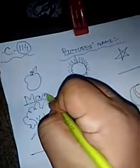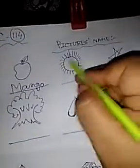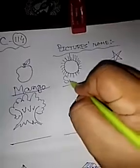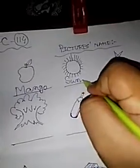That is Mango. So write Mango: M A N G O. Mango. Very good. Now this is Sun, so S U N — Sun.